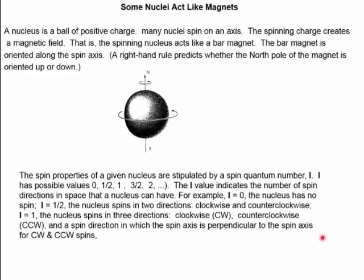A nucleus of an atom is a ball of positive charge. Many nuclei spin on an axis, and the spinning motion creates a magnetic field. As a result, the spinning nucleus behaves like a tiny bar magnet. The direction of the magnetic field of the spinning nucleus can be predicted using a right-hand rule: let the fingers of your right hand curl in the direction of the spin of the positive charge with your thumb extended. The tip of the thumb corresponds to the north pole of the bar magnet.